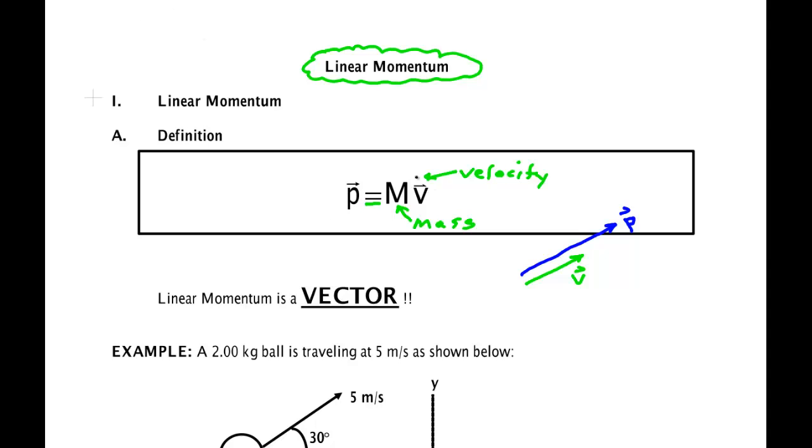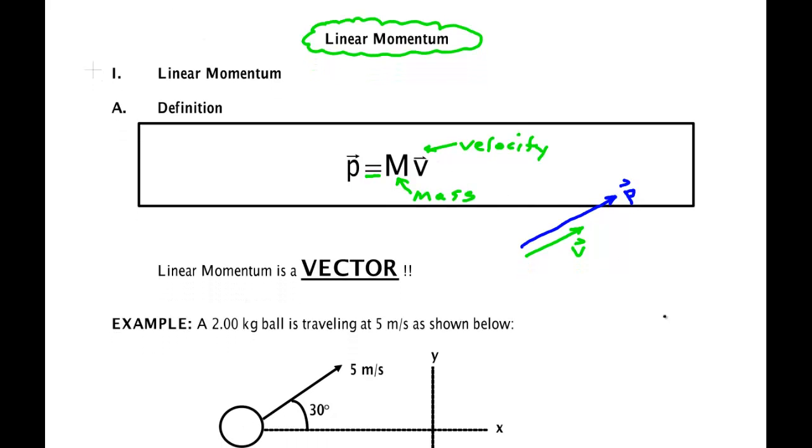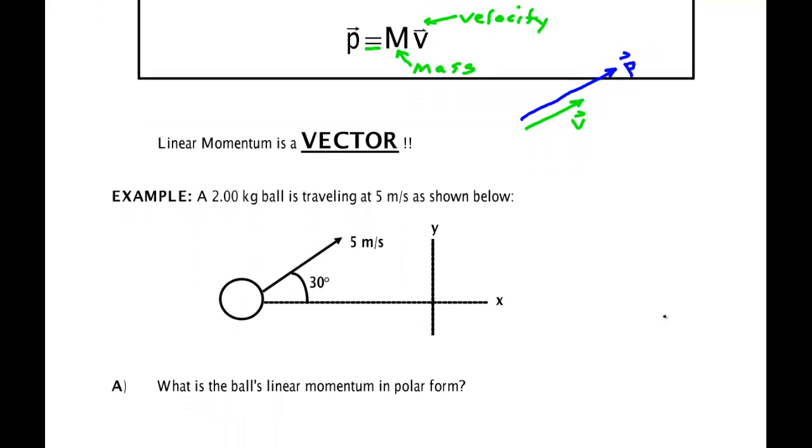The easiest type of questions they can give you is something that's just purely a calculation. A 2.00 kg ball is traveling at 5 m/s at this angle of 30 degrees, and because it is a vector we need some coordinate system in case we have to break that vector into components.